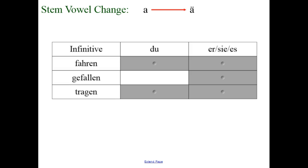The first stem vowel change that you might see is an A to an Ä umlaut, or A to E. The three verbs that you should be familiar with at this point are fahren, gefallen, and tragen.